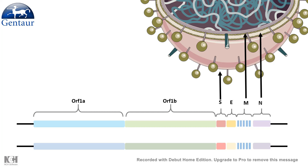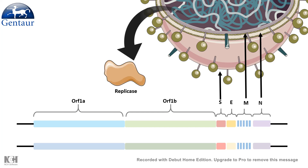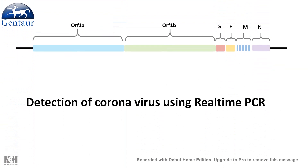Before that, let us understand what they would actually check. Coronavirus has RNA as its genetic material. From its RNA, there is an open reading frame A and open reading frame B, which codes for the replicase, which is absolutely essential for its replication and its life. Other than that, there is another protein encoded by the genome known as the E-protein. Both these proteins are very important for viral propagation.